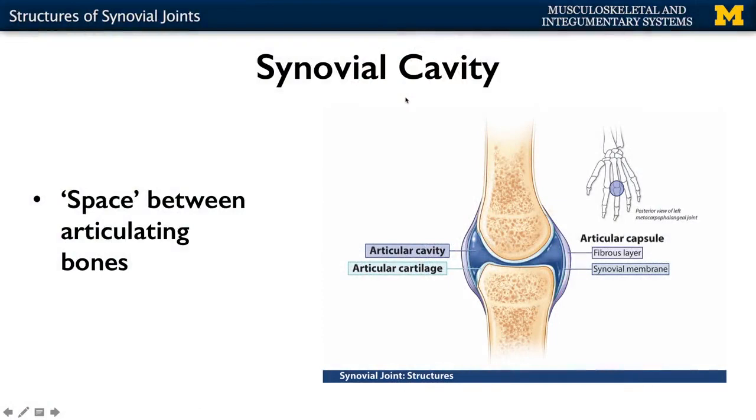The synovial cavity is the space between articulating bones. It's typically almost just a little pocket — sometimes there's very little space whatsoever, so this schematic is obviously exaggerated; it's not ever really that large. But it does allow for movement. If you think about the different types of movement that can occur at your elbow joint, that space allows for the bone to move into different areas.